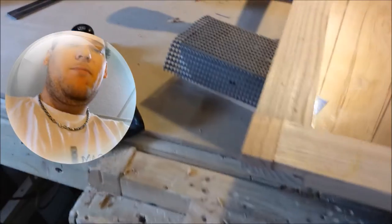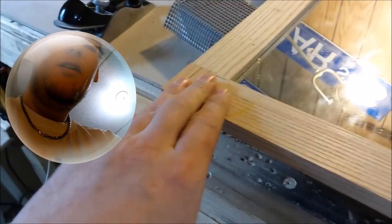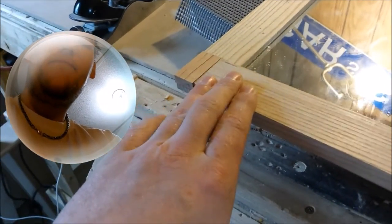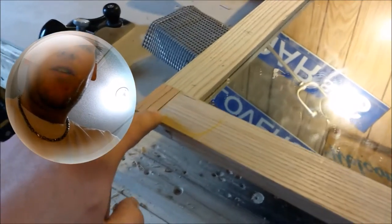All I'm doing is taking my block plane and running across until I'm very close to the matching height, so this is all flush. Once I get it very close, I'll then go to my random orbit sander here and finish it off.